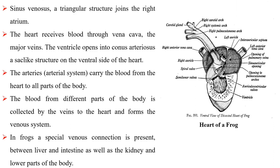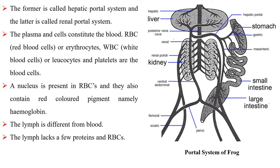Sinus venosus, a triangular structure, joins the right atrium. The heart receives blood through the vena cava, the major veins. The ventricle opens into the conus arteriosus, a sac-like structure on the ventral side of the heart. The arteries carry blood from the heart to all parts of the body. The blood from different parts of the body is collected by the veins to the heart, forming the venous system. In frogs, a special venous connection is present between liver and intestine as well as the kidney and lower parts of the body. The former is called the hepatic portal system and the latter is called the renal portal system.